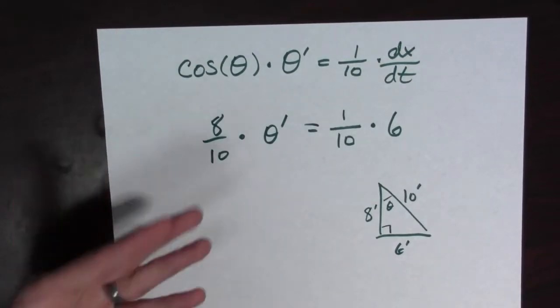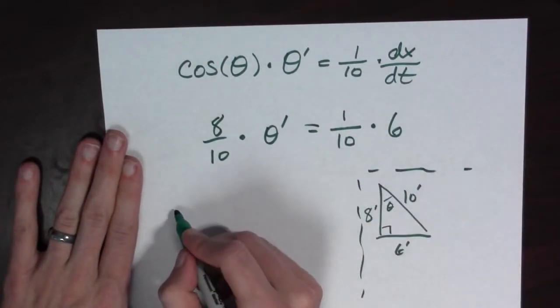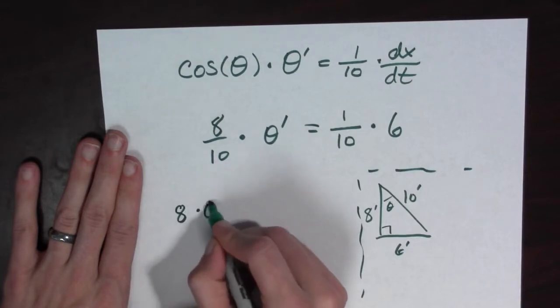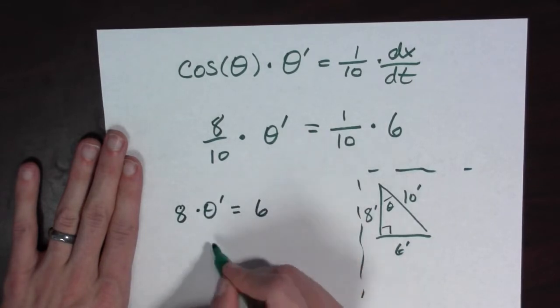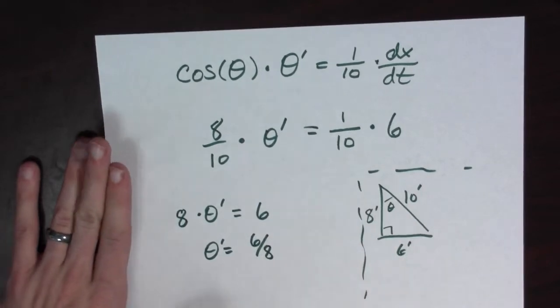Now, look, I can solve for theta prime. Look what happens. I can multiply both sides by ten. And I find that eight times theta prime is equal to six. Theta prime is equal to six over eight.